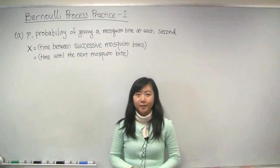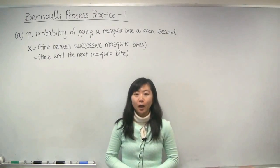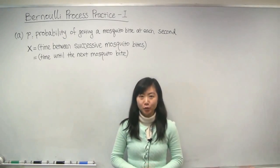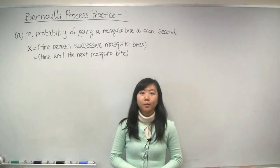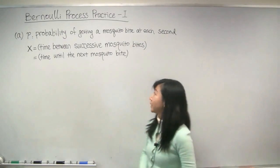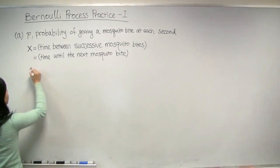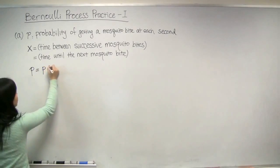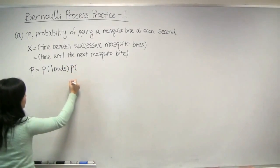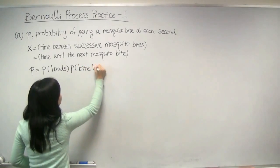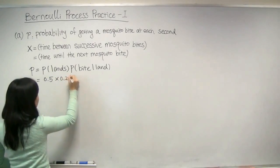For part A of the problem, we are interested in finding the expected value of the time between successive mosquito bites and the variance of the time between successive mosquito bites. From the problem statement, we know that the probability distributions of getting mosquito bites at different times are identically distributed and independent. Therefore, the mosquito bites occur as a Bernoulli Process with parameter p, where p represents the probability of getting a mosquito bite at each second. And p can be calculated as the probability that a mosquito lands on your neck at each second, multiplied by the probability that a mosquito will bite you given that it has landed on your neck. This is equal to 0.5 times 0.2, which is equal to 0.1.